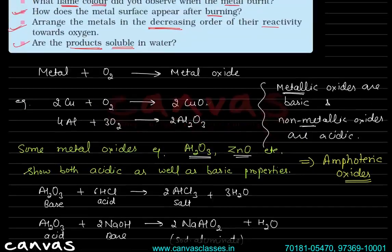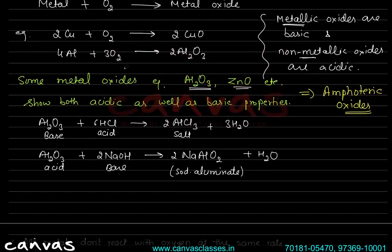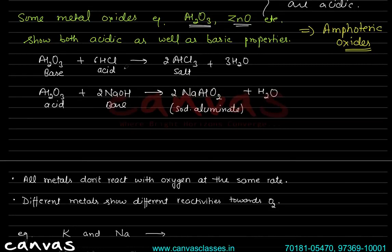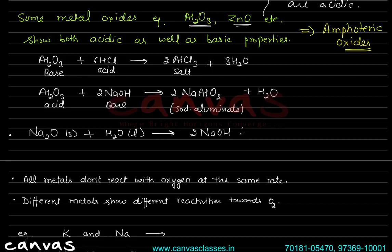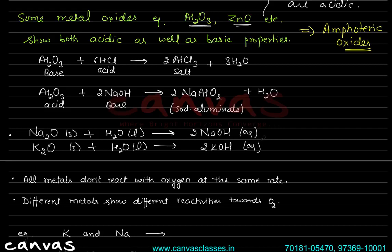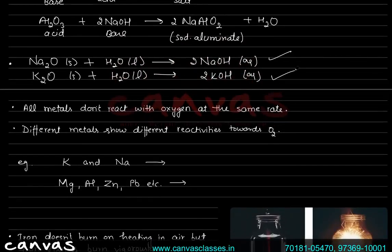Regarding solubility in water: some metal oxides are soluble and some are insoluble. For example, sodium oxide (Na₂O) dissolves in water to give sodium hydroxide, which is a strong base. Similarly, potassium oxide dissolved in water gives potassium hydroxide (an alkali). However, copper oxide and zinc oxide are not soluble in water.